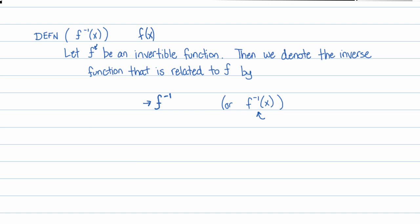A couple things I need to warn you about: f inverse is not equal to one over f. It's such an unfortunate notation that whoever chose it picked for inverse functions. They should have gone with something absolutely different because we have negative exponents, and we're so used to seeing a negative exponent meaning to drop that term downstairs. But when you're talking about a function f, that's a function name. When I see a negative one as a superscript, I know they mean the inverse of f — not one over f. It's the inverse of f, whatever machine undoes f. Extremely unfortunate notation.